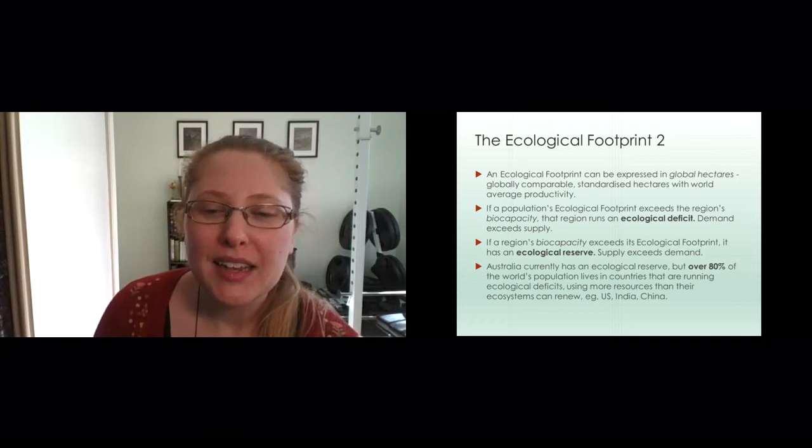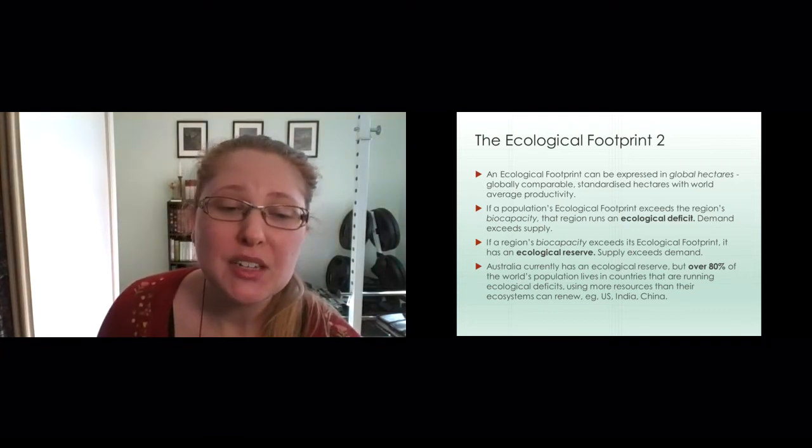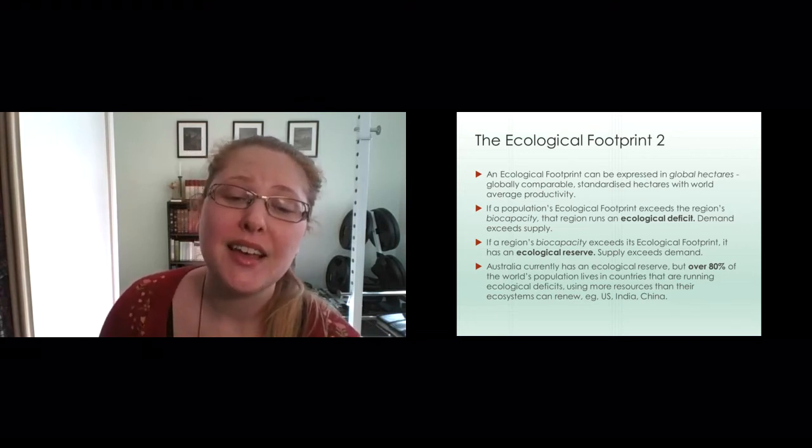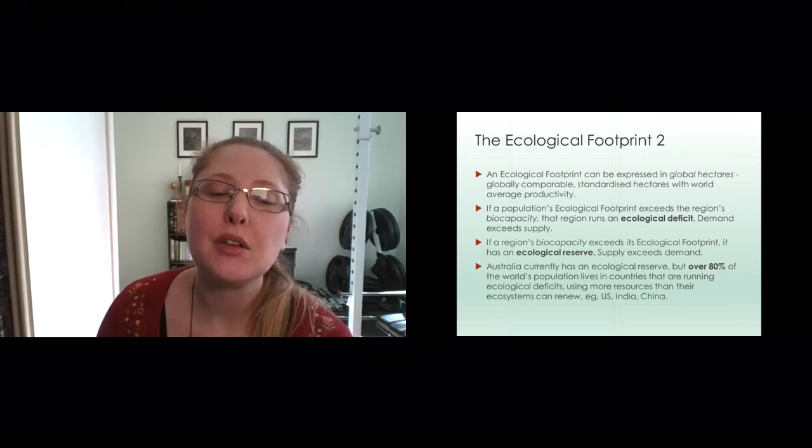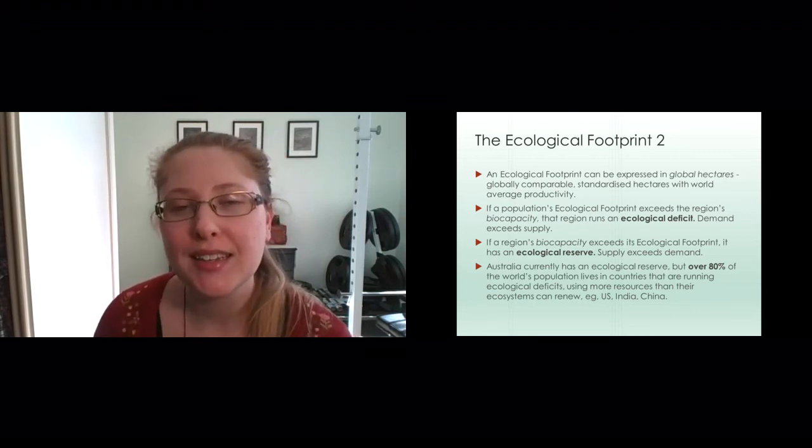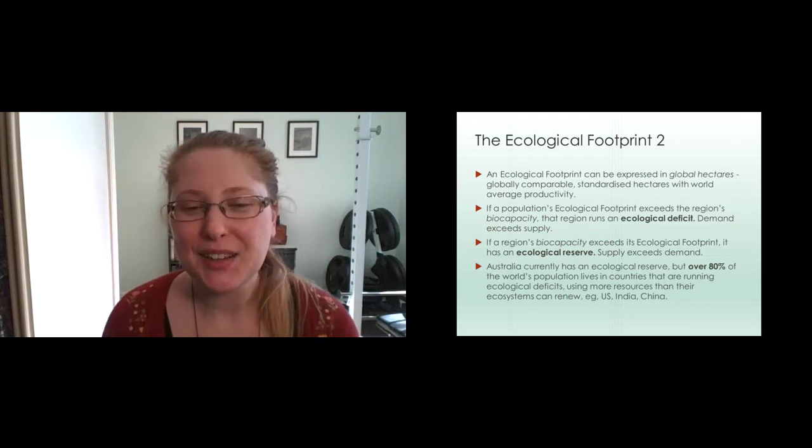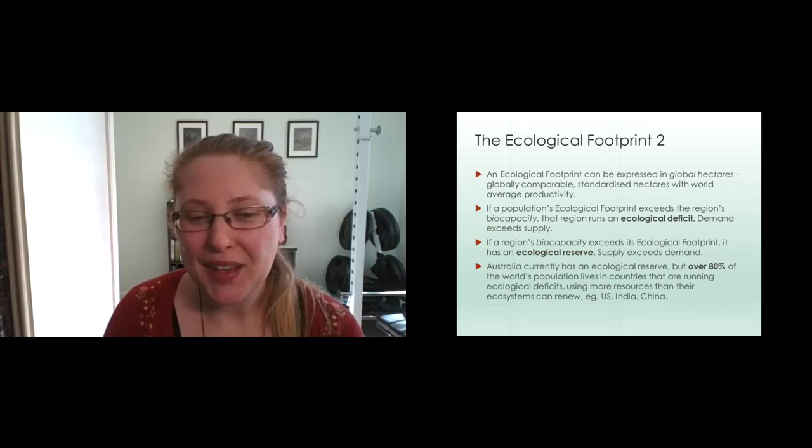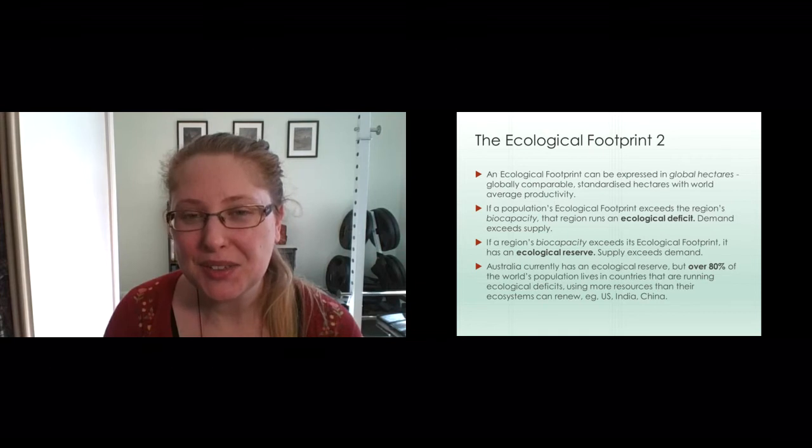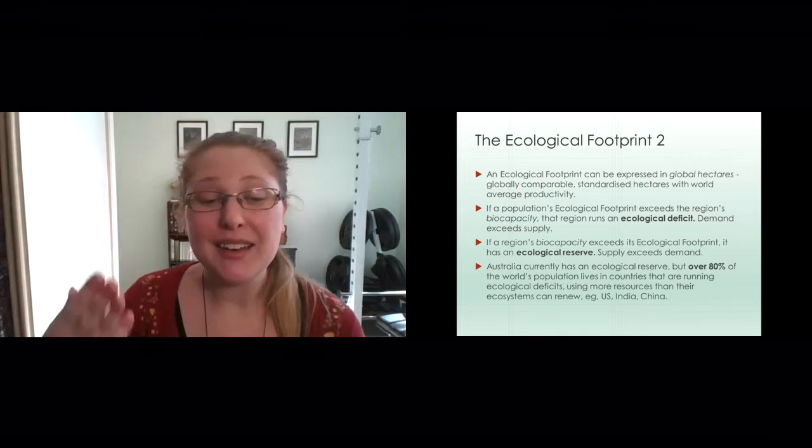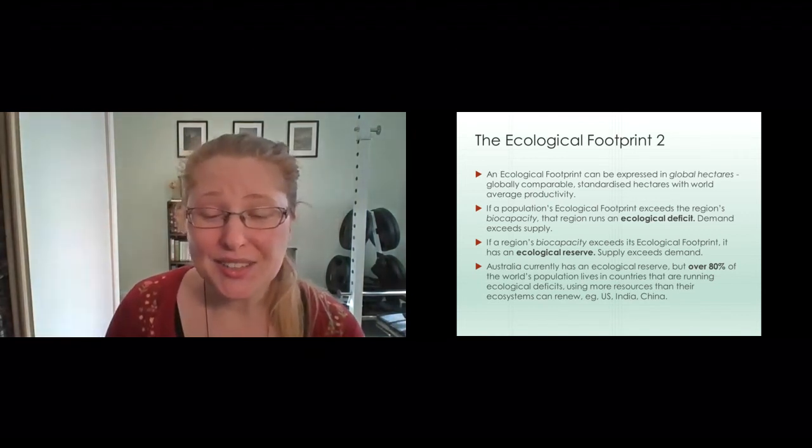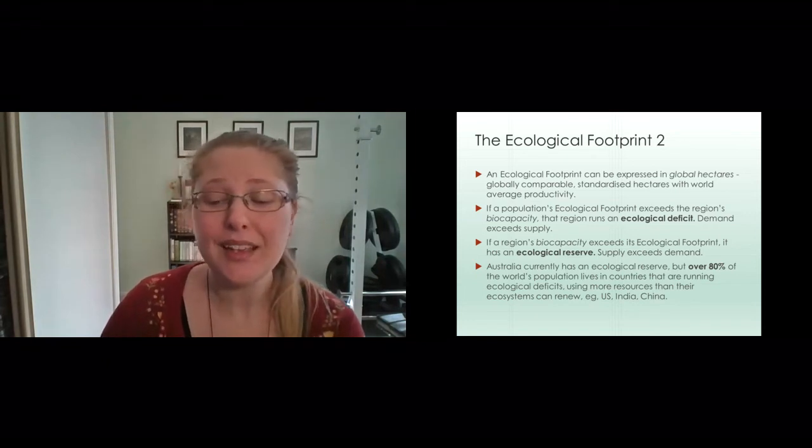And apparently Australia currently has an ecological reserve but over 80% of the world's population lives in countries that are running ecological deficits and are therefore using more resources than their ecosystems can renew, so places such as the US, India, China. I don't think that you would need to have tremendously sophisticated maths to know that if 80% of the population are in countries where there's ecological deficits we're probably as a planet running quite a bad deficit and that's what's getting us into the trouble that we're in. This is a model for thinking through what a more balanced approach might look like.